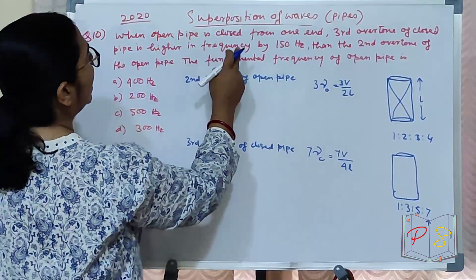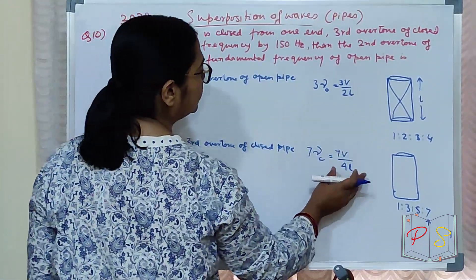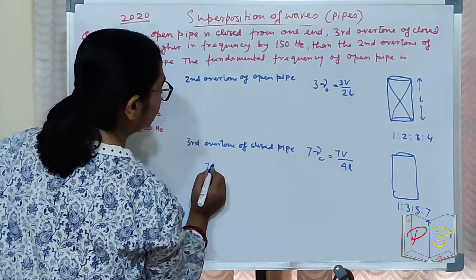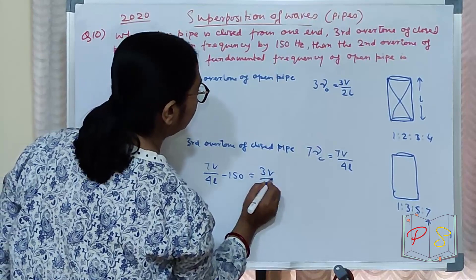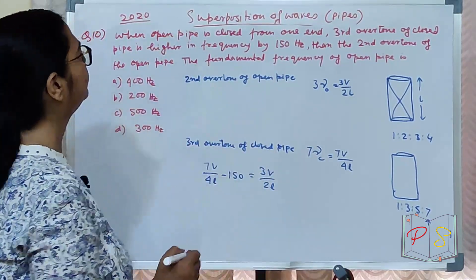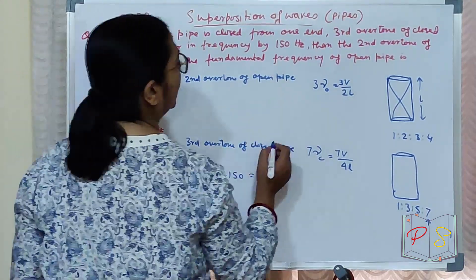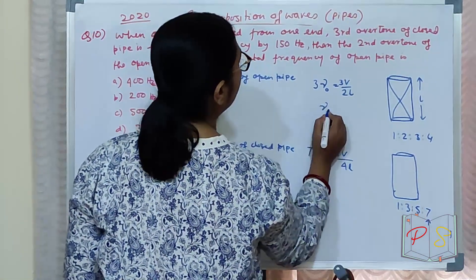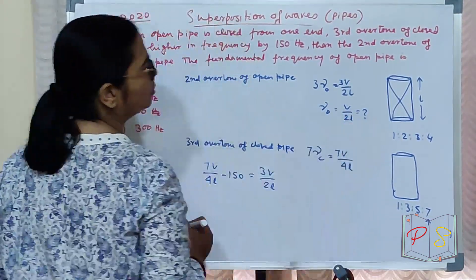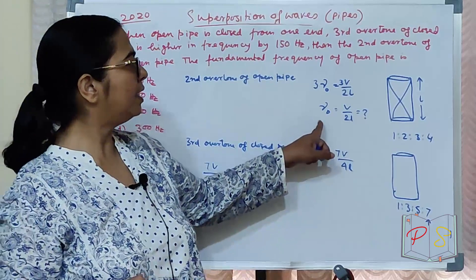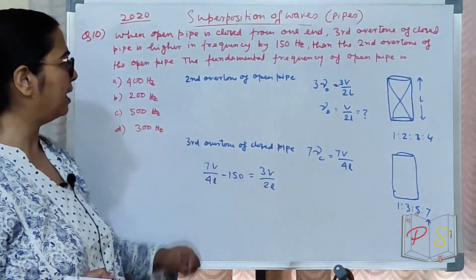The third overtone of the closed pipe is higher in frequency by 150 Hz. So 7V/4L minus 150 equals 3V/2L. The fundamental frequency of the open pipe is what we need to find - V/2L equals what? This is your question.